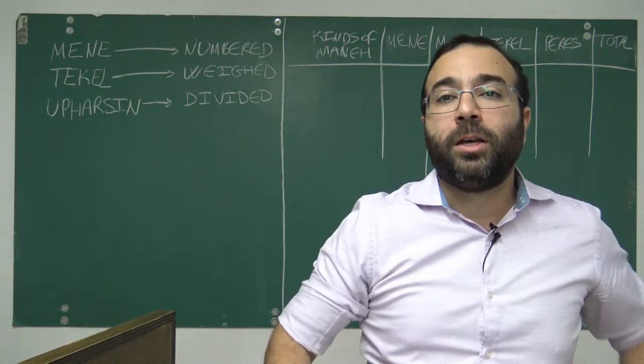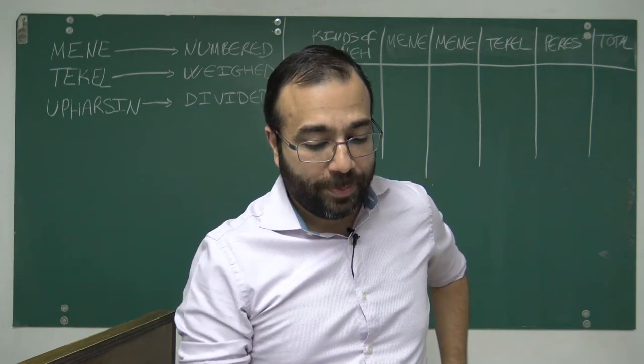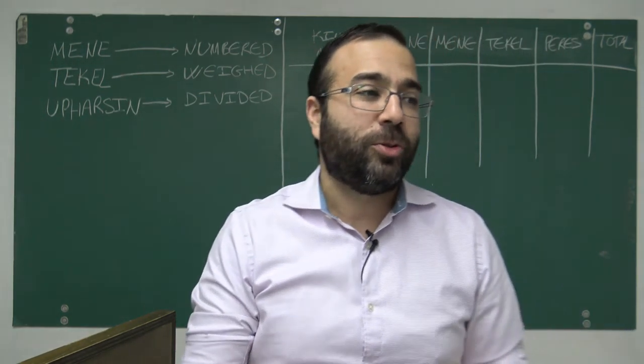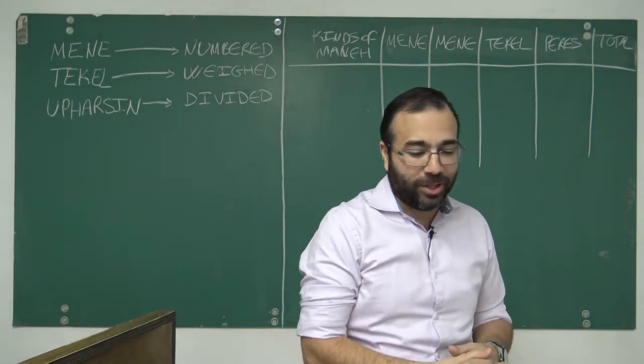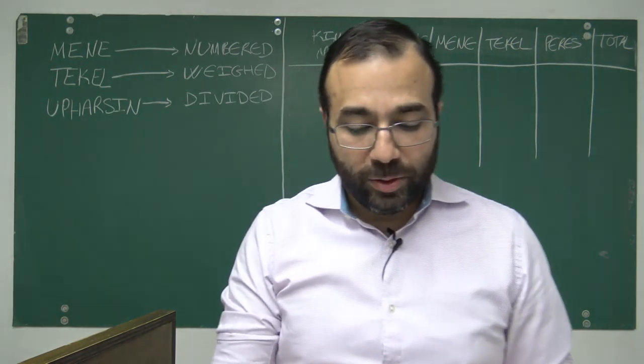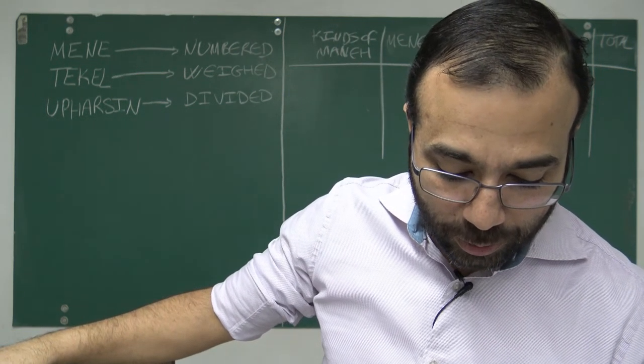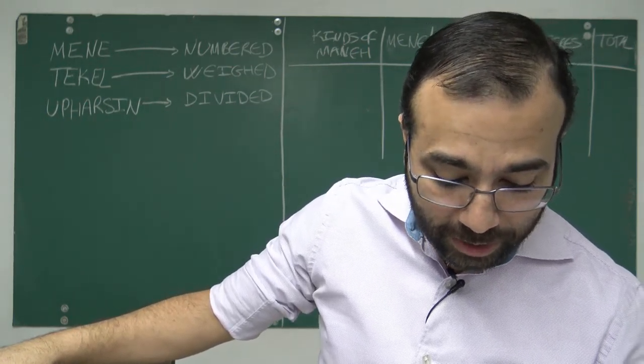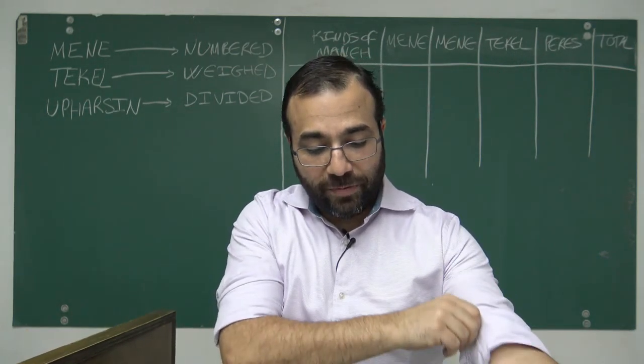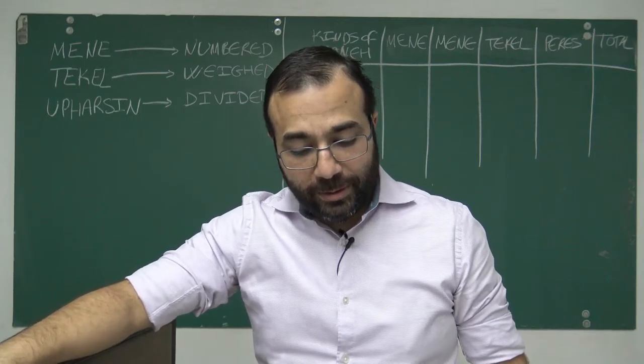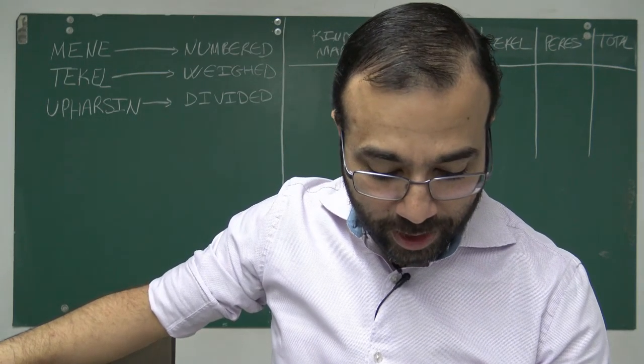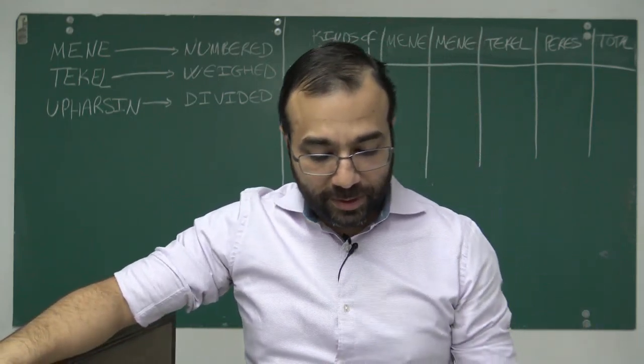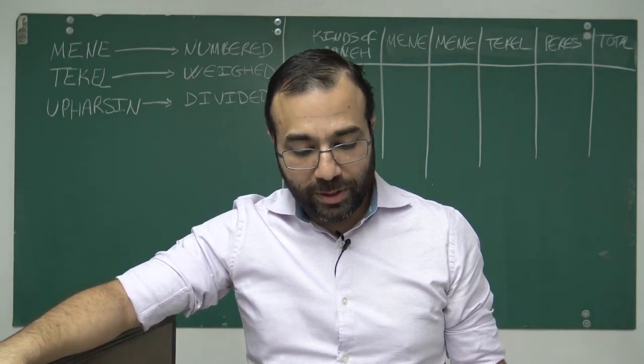He kind of freaks out. Nobody can figure it out. He calls in all the Chaldeans to interpret the language, and nobody can interpret it until the queen mother tells him to send for Daniel, who will explain it to you. In verse 24, Daniel the prophet tells him the part of the hand was sent from him and this writing was written.